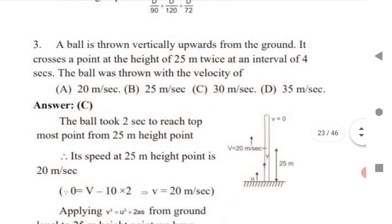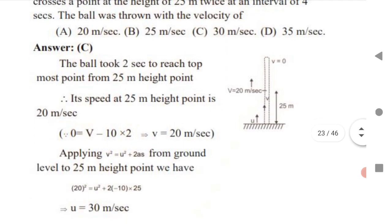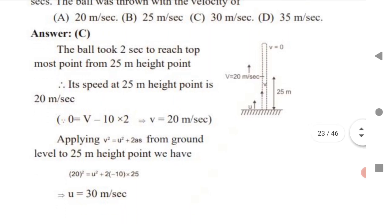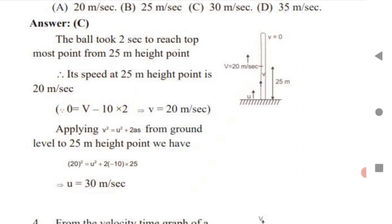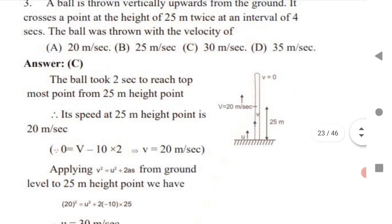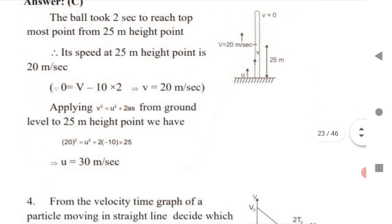Next: a ball is thrown vertically upward from the ground. It crosses a point at a height of 25 meters twice at an interval of 4 seconds. Find the velocity with which the ball was thrown. The ball took 2 seconds to reach the topmost point from 25 meter height, so its speed at 25 meters is 20 m/s. Use v = u - gt with a = -g, then apply v² = u² + 2as to find initial velocity. Substitute values; you will get the answer.